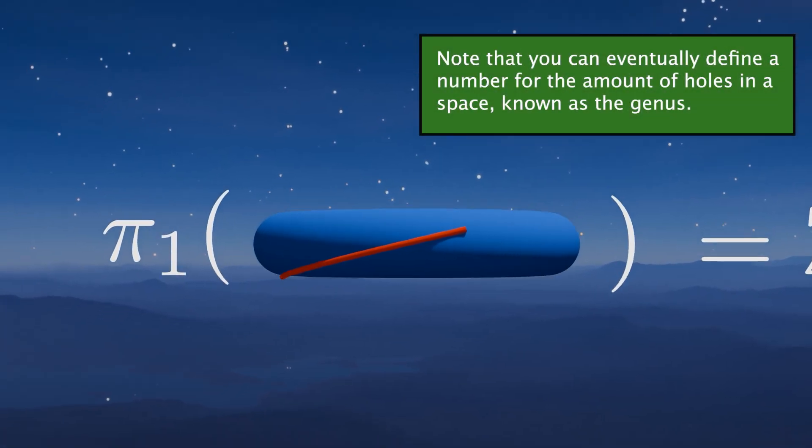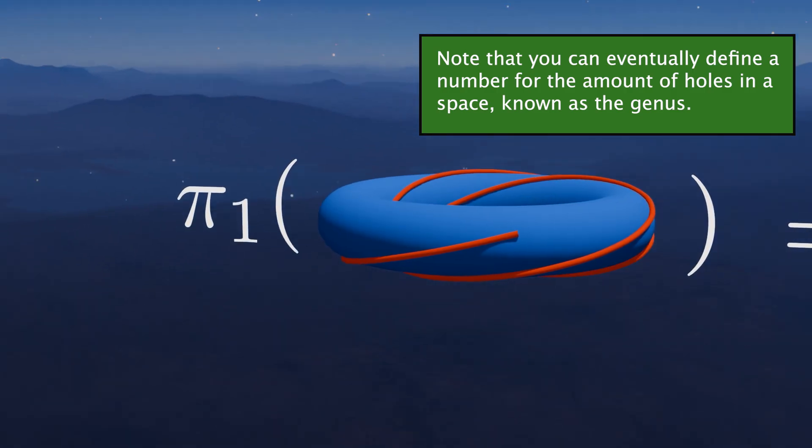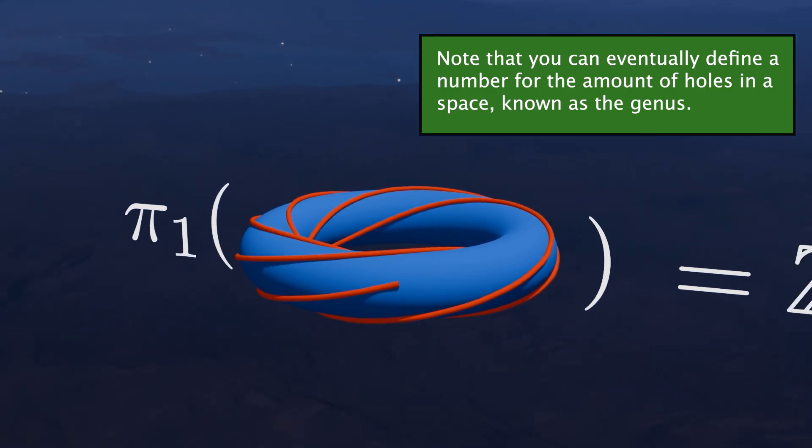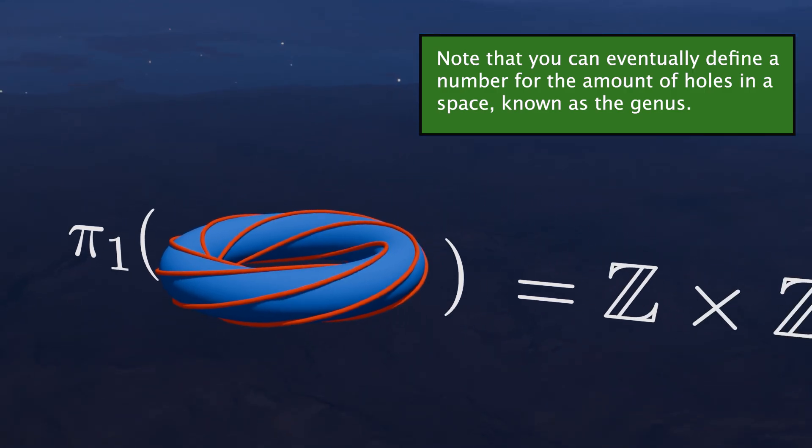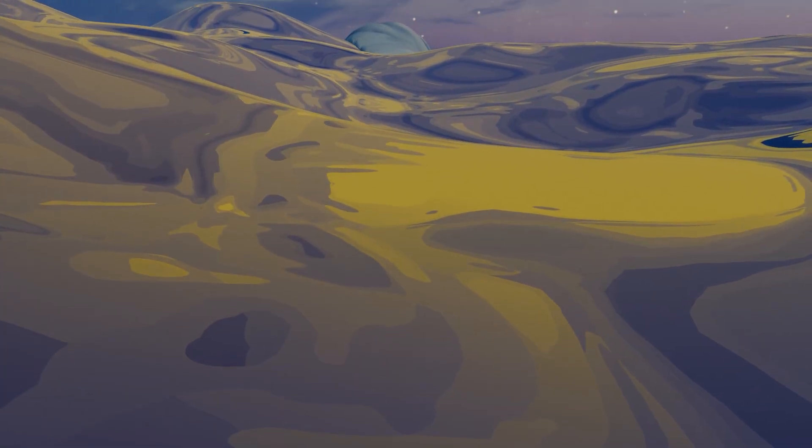But even though we didn't get an exact number, we still got a kind of detector that can tell apart between spaces with holes and without holes. This is just the tip of the iceberg when it comes to topology and telling different spaces apart.